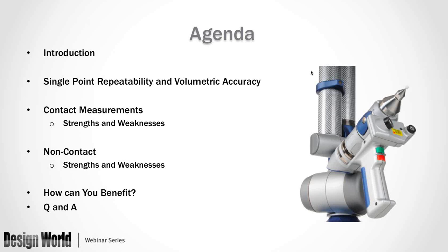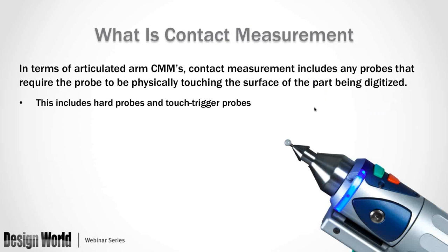So what is contact measurement? With an articulated arm coordinate measuring machine — abbreviated CMM — a contact measurement is any type of probe that requires direct contact with a surface. It needs to be physically touching the part that you want to record. We're going to be covering hard probes and touch trigger probes. The big difference is that it needs to be physically touching the part.